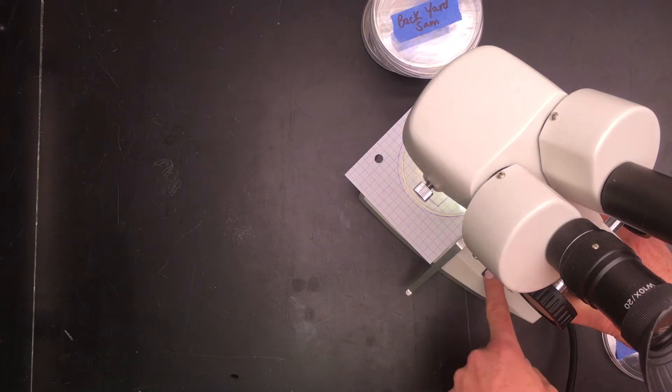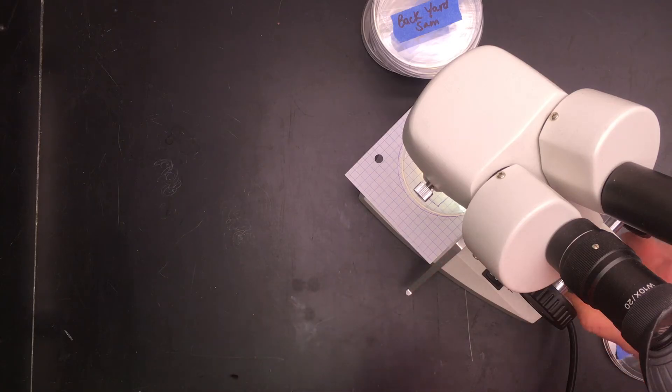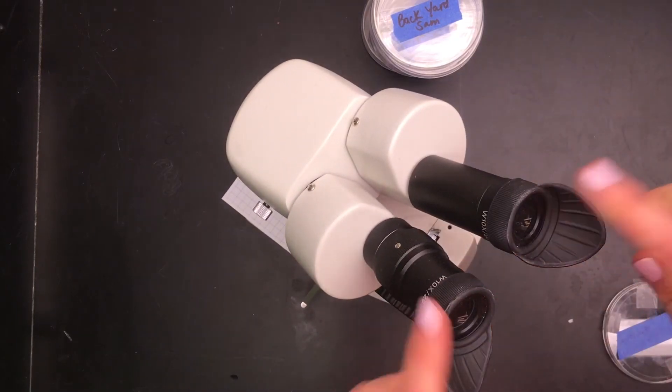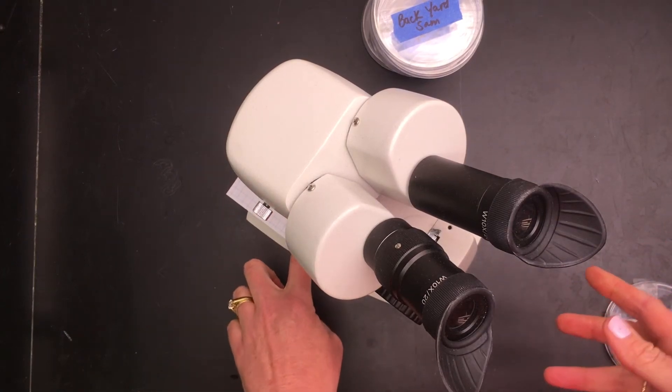There's settings on the stereoscope for different light intensities, so play around with whatever light intensity you want. Once you have decided your light intensity and make sure it's the same for all of the dishes, then you're gonna look through the eyepieces and count the number of particulates in the squares on your template.